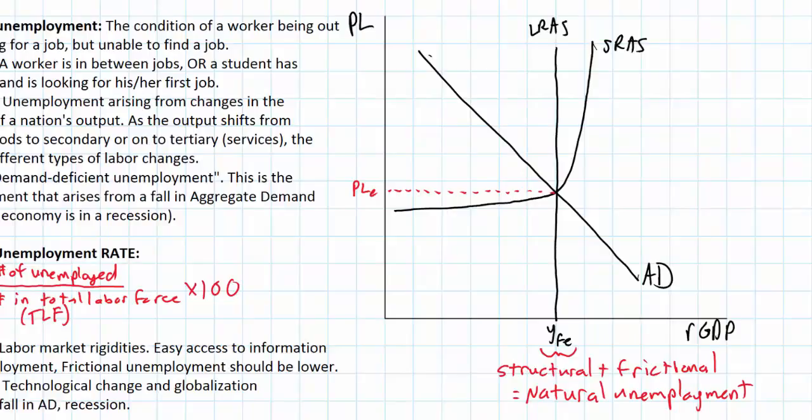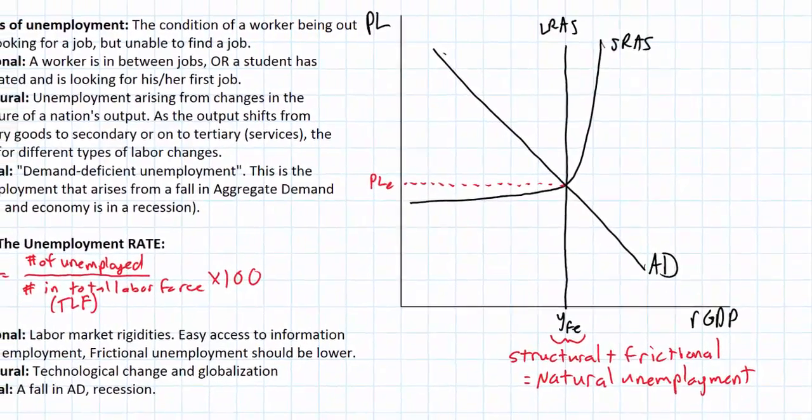And the rate of unemployment that prevails when an economy is producing at its full employment level is called the natural rate of unemployment. So corresponding with the full employment level of income we have structural and frictional unemployment.